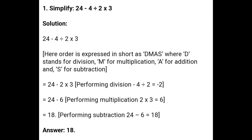So see children, some examples are on your screen. First example: simplify 24 minus 4 divided by 2 into 3. The order is expressed in short as DMAS — D for divide, M for multiplication, A for addition and S for subtraction. So first we will do division: 4 is divided by 2 and you have got 2. Then you will multiply 2 and 3. You have got 6. In the third step you have to subtract 6 from 24 and you have got 18.